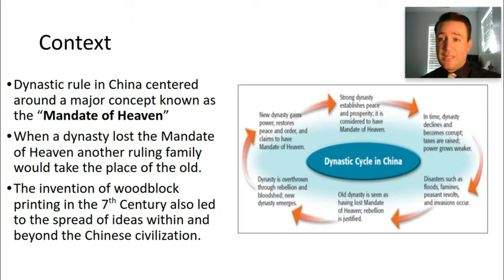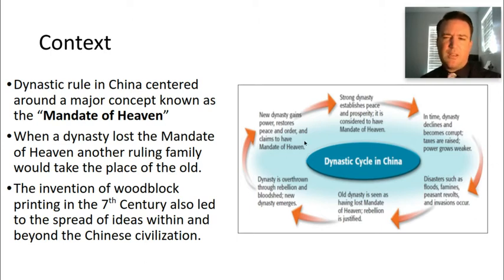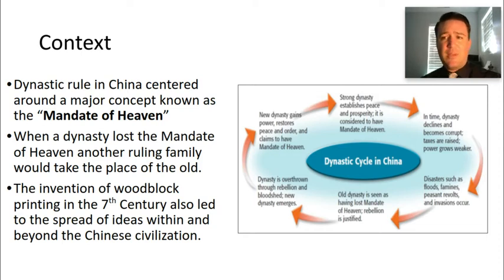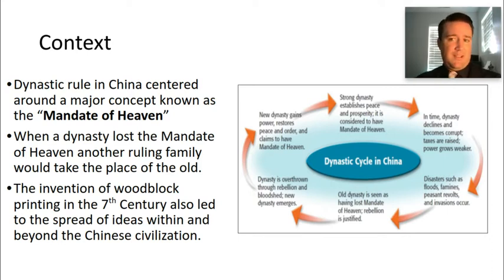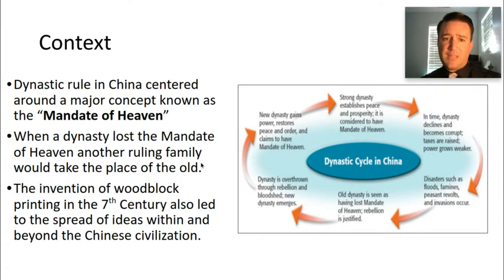Sometimes there's a period between dynasties where warring parties try to gain control, and then a new dynasty comes in and the whole cycle starts all over again. For the Chinese, when they look at their civilization and history, they measure it in millennia and centuries. We tend to think of decades, but the Chinese think in terms of centuries and millennia.